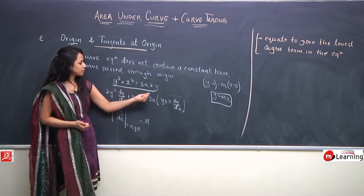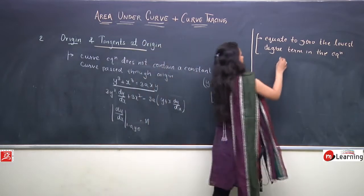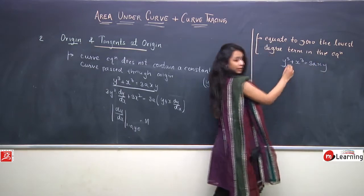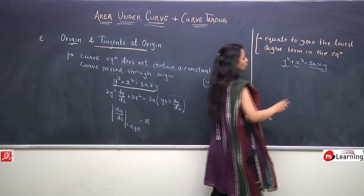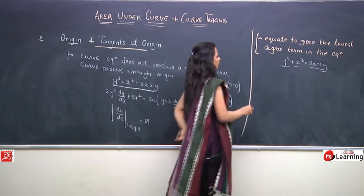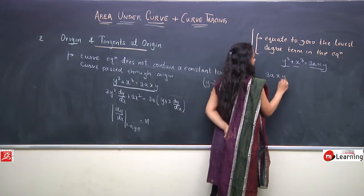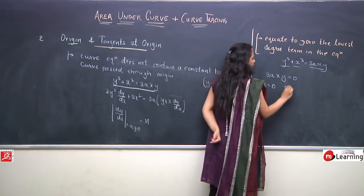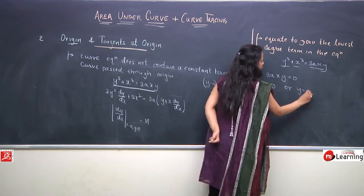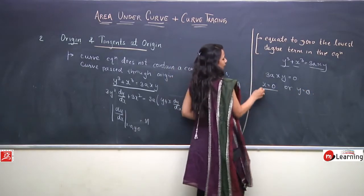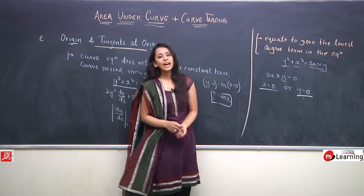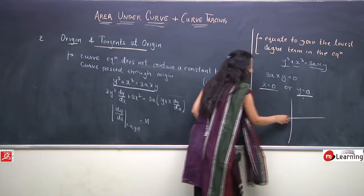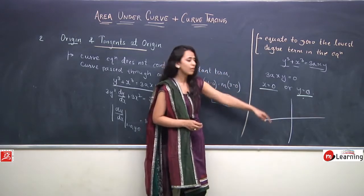Let us apply the shortcut to y³ + x³ = 3axy. The degrees are 3, 3, and 2 respectively, so the lowest degree term is 3axy. Equating 3axy = 0 gives x = 0 or y = 0. So x = 0 and y = 0 are the tangents to the curve at origin, meaning the x-axis and y-axis are both tangents at origin.